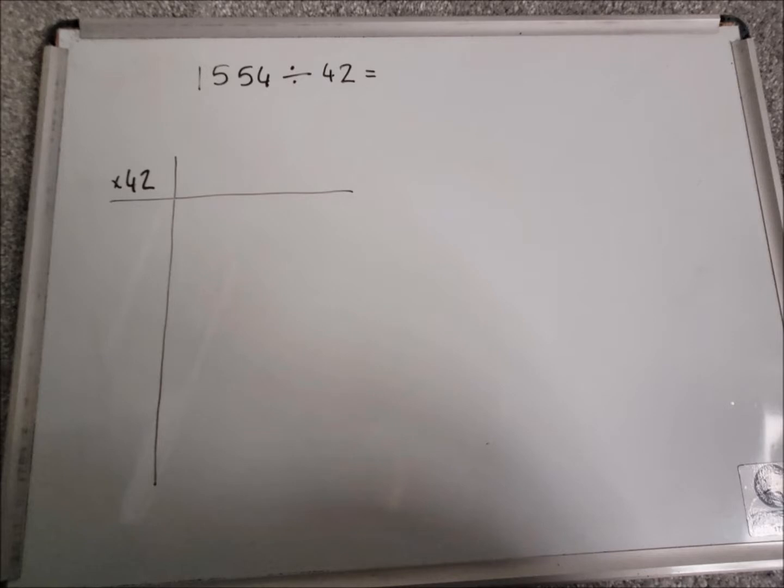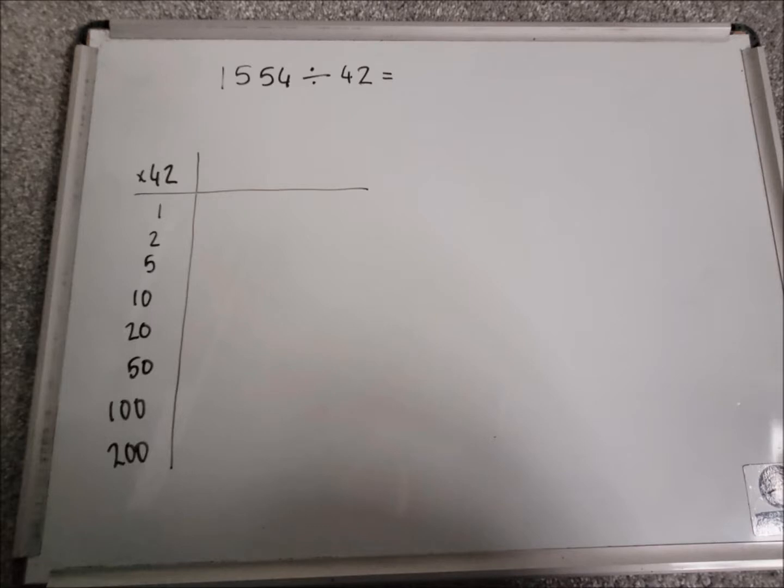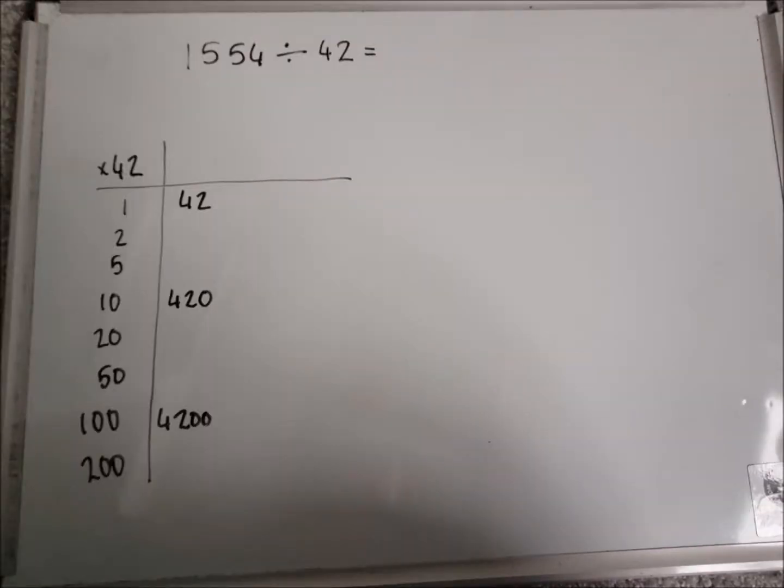Let's have another look at another example. Here we have 1554 divided by 42. So similar to last time, I'm going to set out a nice big coin card for 42. I fill in the 1, 10, and 100 first. So I've got 42, 420, and 4200.